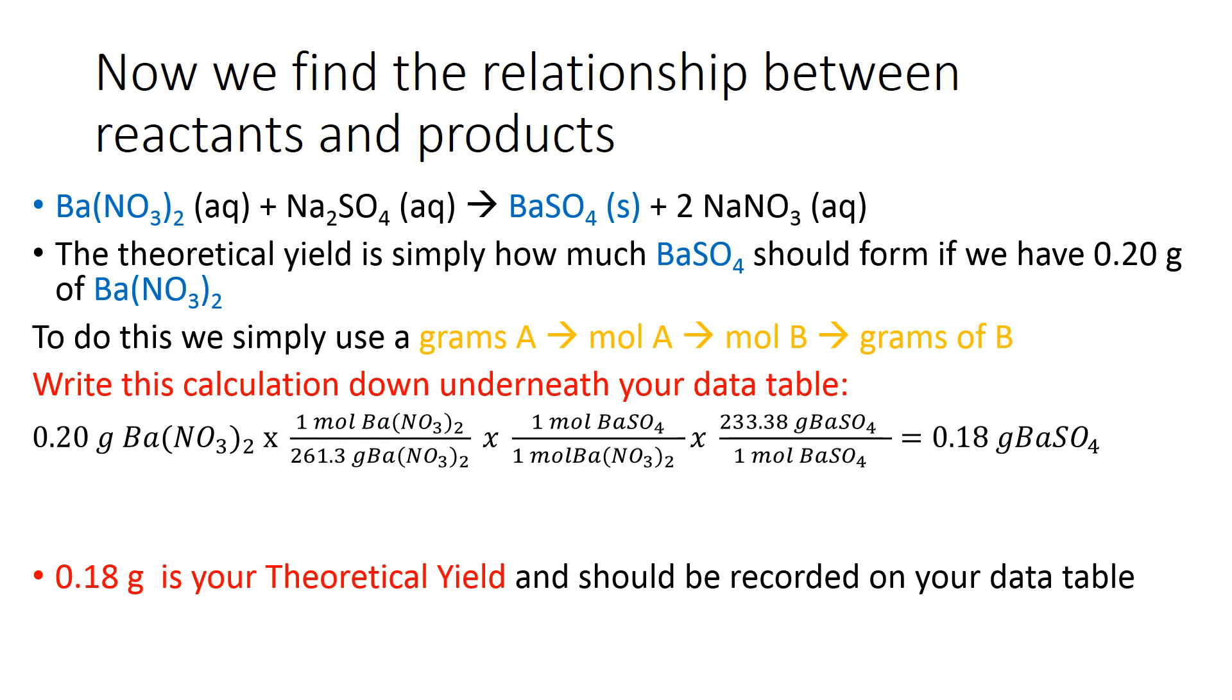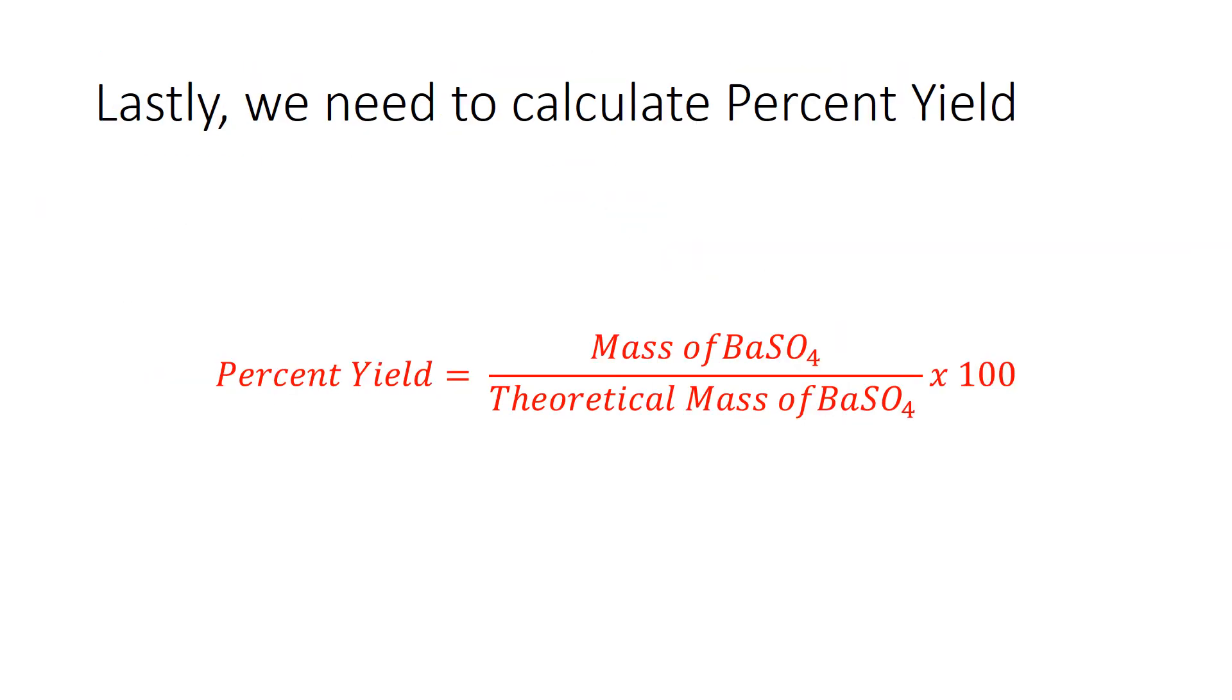That's what we got from the 0.2 that we put in. That is the theoretical yield, which means that's what we should have got in a, I guess you'd say, perfect world. Go ahead and record that on your data table also: 0.18 grams as your theoretical. The last thing you need to do now is calculate the percent yield, and I'm going to let you do that because in order to calculate the percent yield, which is last on the data table, take the mass of the barium sulfate, which is on your data table, and then divide that by the theoretical mass, which we just calculated. Then you're going to multiply by 100 and you have a percent yield.